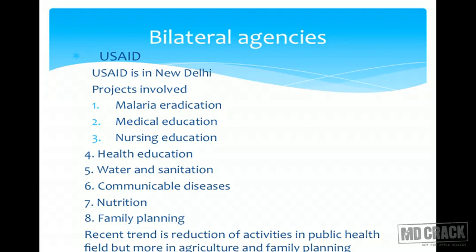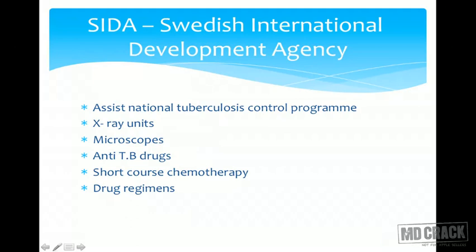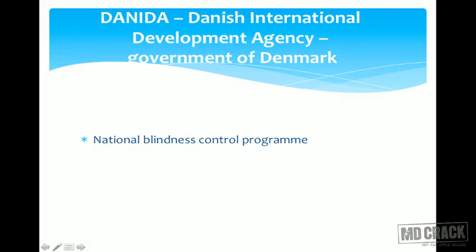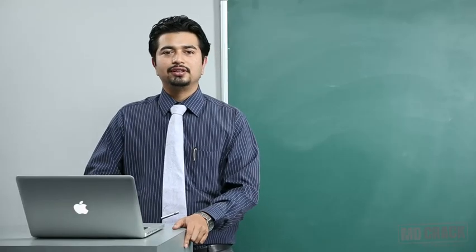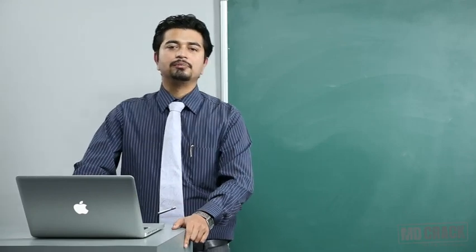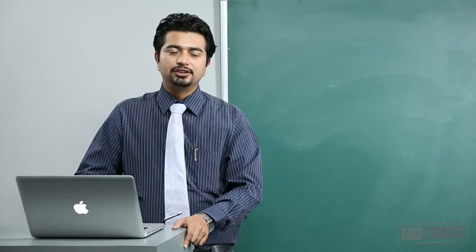SIDA, the Swedish International Development Agency, has assisted the national tuberculosis control program notably, providing X-ray units, microscopes, anti-tubercular drugs, short-course chemotherapy, and drug regimens. DANIDA, the Danish International Development Agency — a Government of Denmark function — has contributed to the national blindness control program. So to summarize: DANIDA supports the blindness control program and SIDA supports the tuberculosis control program.